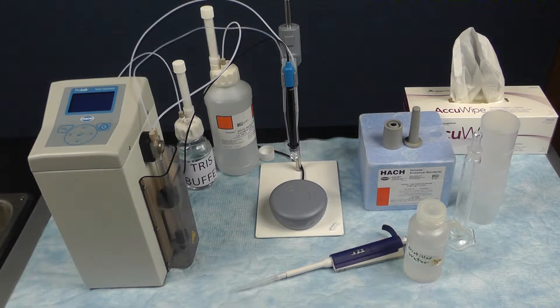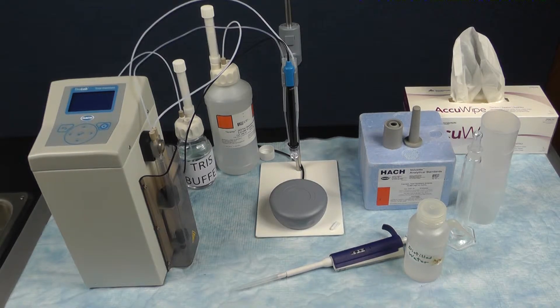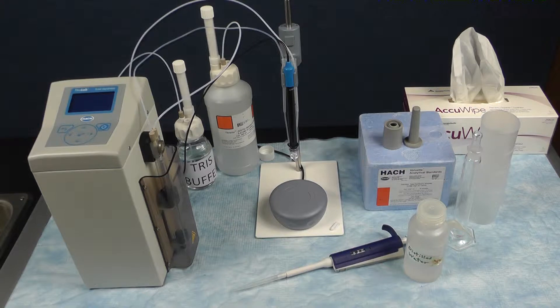Total hardness is determined by the concentration of multivalent cations in water. The Hach TitraLab measures these ions by titration using a calcium ion selective electrode and EDTA as the titrant. In this video we are going to show you how to operate the Hach TitraLab for total hardness.